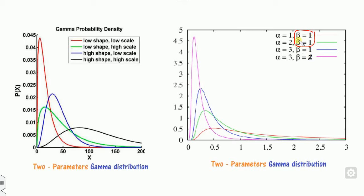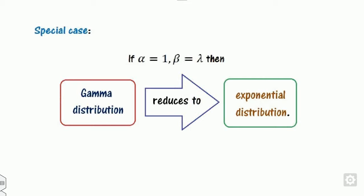On the other hand, beta is the scale parameter. If you fix alpha and change beta, you can analyze the impact of the scale. Looking at the blue and pink curves, when you increase the scale parameter beta, the peak becomes higher. You can also see the effect by fixing alpha and varying beta separately.